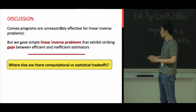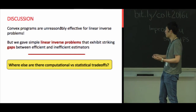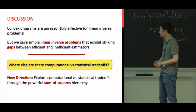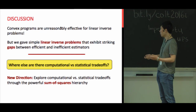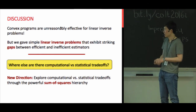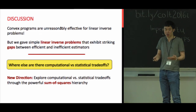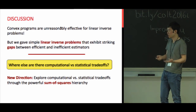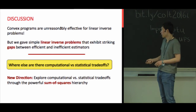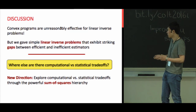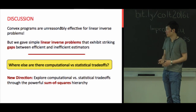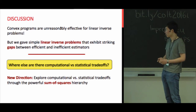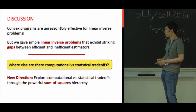Going forward, this is an example of a computation–statistics trade-off. Convex programs are unreasonably effective for linear inverse problems like matrix completion, but this paper shows that such problems can have a gap between efficient and inefficient algorithms, especially in tensor settings. To explore computational versus statistical trade-offs in general, it is often necessary to prove computational lower bounds. One concrete approach is to quantify computational difficulty by asking how many levels of the sum-of-squares hierarchy are needed to solve a problem.